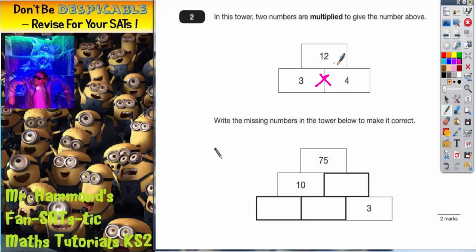Another way of saying that is to get a number underneath, you do the number on top divided by the number underneath. So 12 divided by 4 would give us 3, or 12 divided by 3 would give us 4.